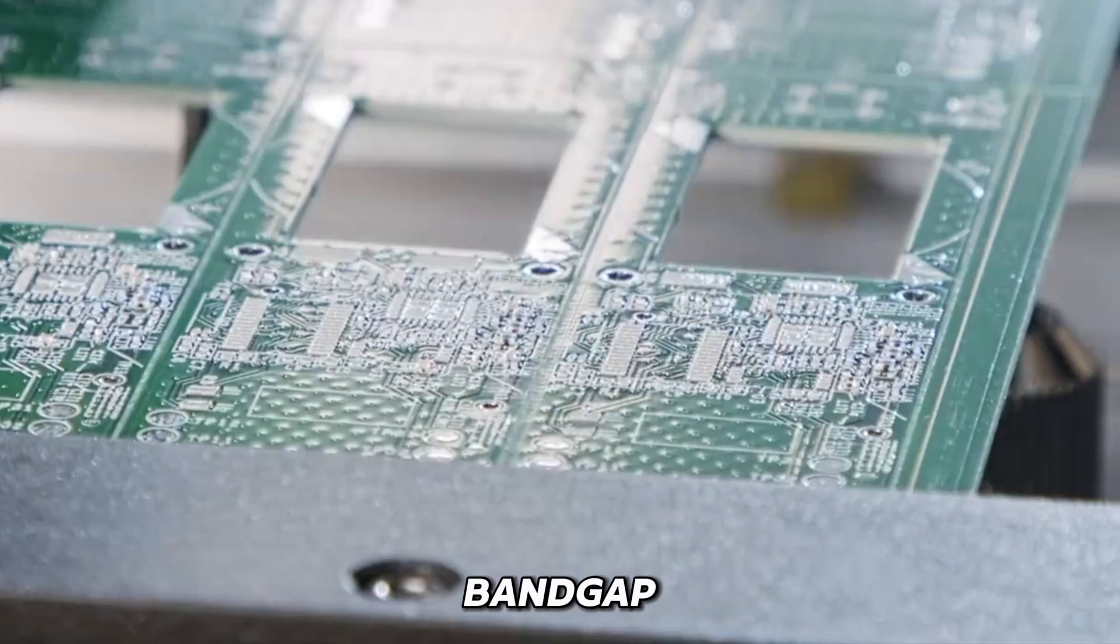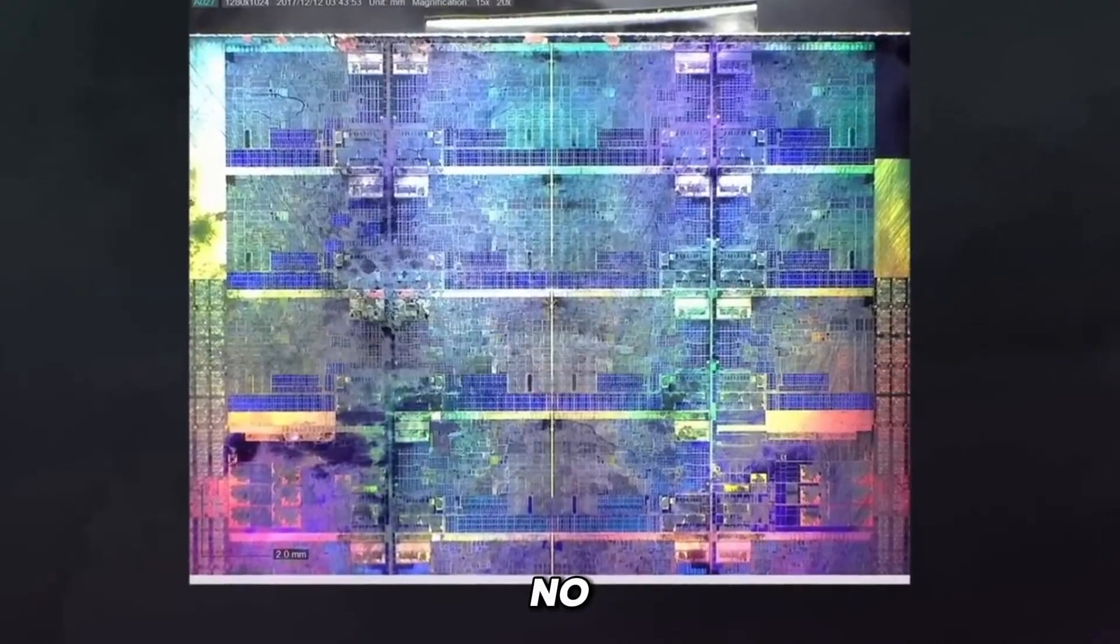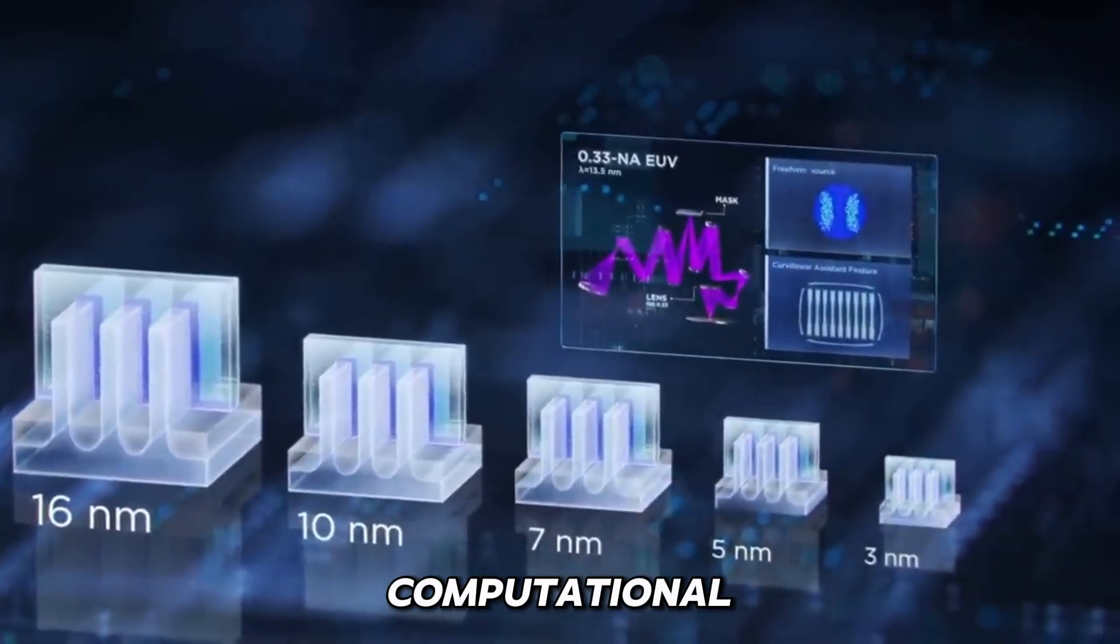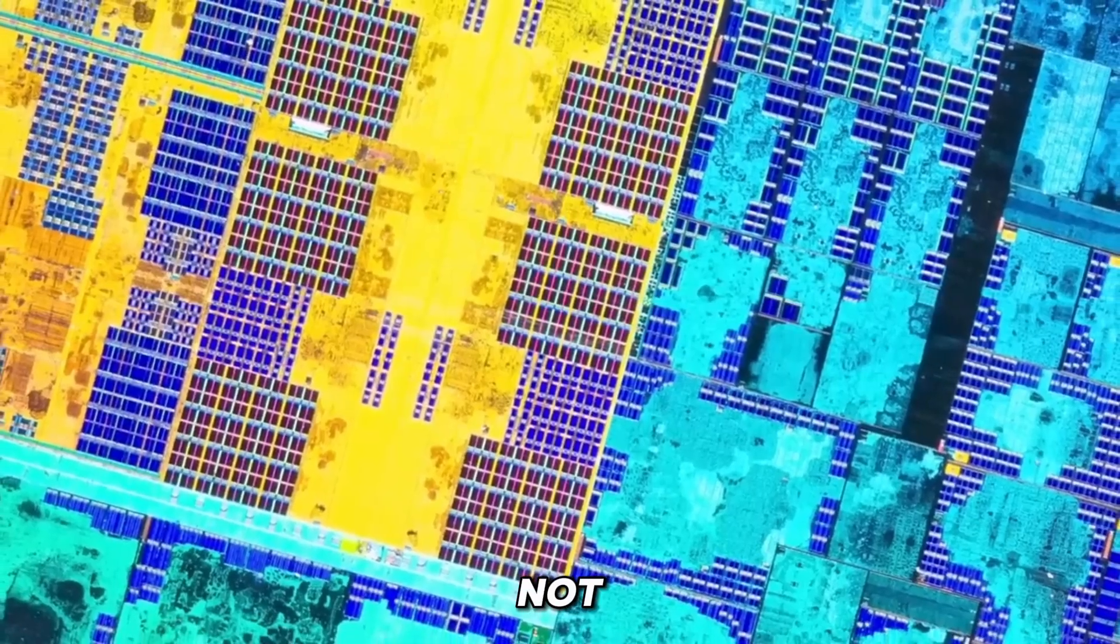But there's a catch. Bismuth naturally lacks a band gap, making it behave like a metal. Without a band gap, there's no switching. And without switching, there's no computational logic.